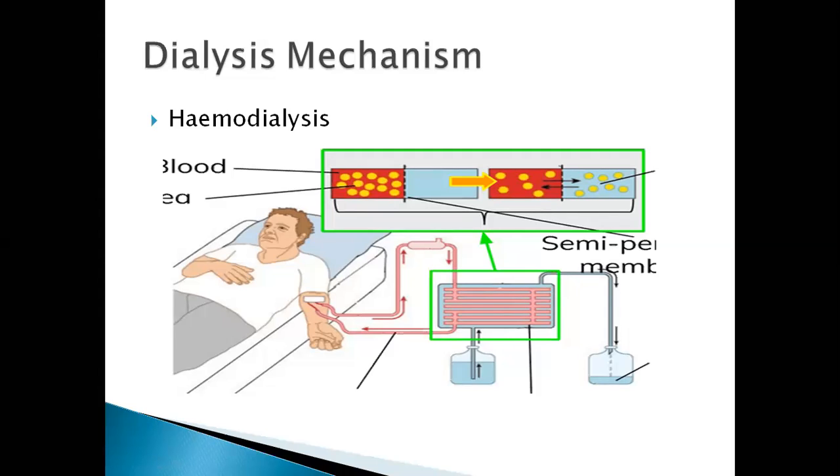There are two types of dialysis. Number one is the hemodialysis that you can see in this picture. What happens in hemodialysis? It removes waste and water by circulating blood outside the body through an external filter called a dialyzer.